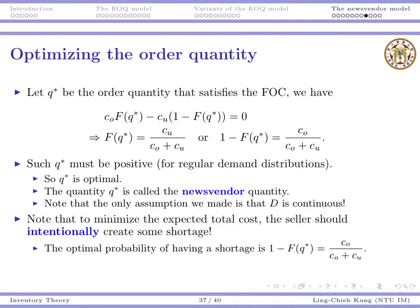Let's do some interpretations. First, when we want to minimize the expected total cost, the seller should intentionally create some shortage. This is very intuitive. But mathematically, how do we see this? We know that F(Q) is the probability for D to be smaller than or equal to Q. This is the probability for we to have some leftover.